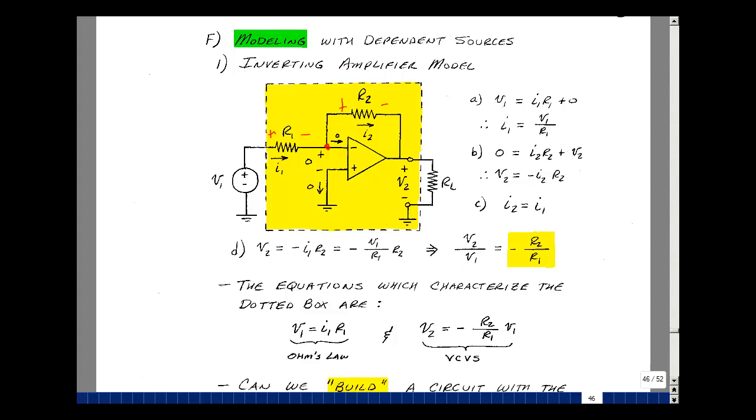As far as the yellow box goes, on the outside of it, we have a current I1 flowing, and the relationship we found was that V1 is equal to I1R1. And we found that V2 is equal to minus R2 over R1 times V1. A model has the same set of equations. It's just Ohm's law, and this is really a voltage-controlled voltage source.